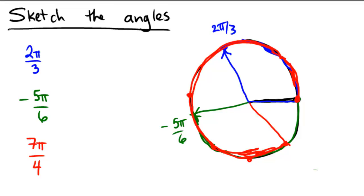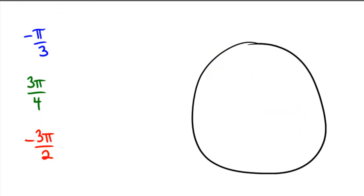Okay, why don't you try a handful on your own here. Try these three angle measures: negative π over 3, 3π over 4, and negative 3π over 2. Assuming you tried it on your own, I'll do it here and see if you get the same answer as I do.